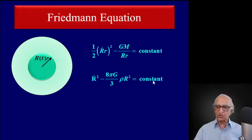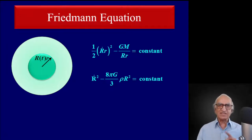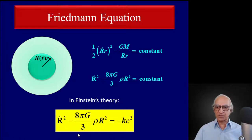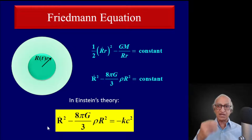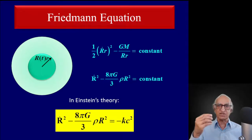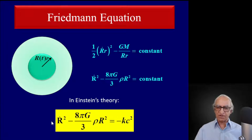That's what Newtonian theory tells you, but in general relativity this is not the way to write it. What Friedman discovered and derived — the Friedman equations — is that Ṙ² satisfies a differential equation. This comes by plugging the Friedman-Robertson-Walker metric into Einstein's gravitational field equations, giving you an equation for R(t): Ṙ² − (8πG/3)ρR² = −kc², where k is the curvature constant which entered our metric.